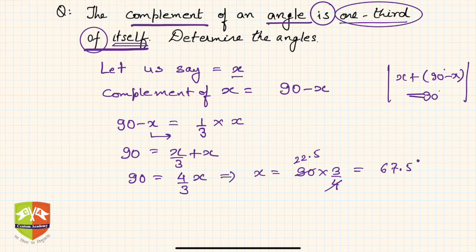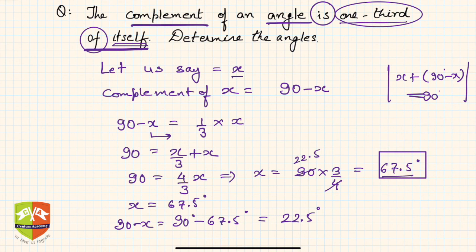So x is 67.5 degrees. What is complement of x? 90 minus x, which is 90 minus 67.5 degrees, which is nothing but 22.5 degrees. So you see, one angle is 67.5 and one third of it is 22.5, and if you add both of them you will get 90 degrees. This is what the question was all about.